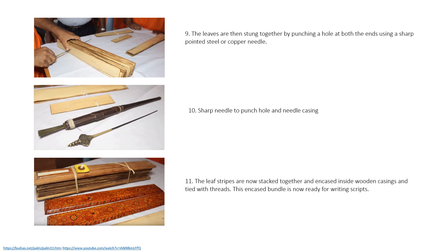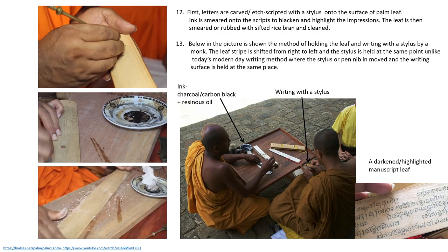The leaves are then strung together by punching a hole using a sharp steel or copper needle. The leaf stripes are stacked together and encased inside a wooden casing and tied with threads — now ready for writing scripts. For writing on a palm leaf, the leaf is held between the fingers and letters are carved and etched with a sharp pointed stylus, then ink is smeared over the surface. Ink is made of charcoal or carbon black or lamp black mixed with a resinous oil. The surface is then wiped with a muslin cloth and cleaned by rubbing sifted rice bran, leaving a darkened and highlighted manuscript.